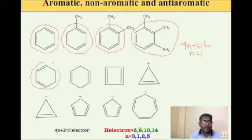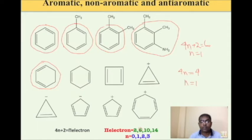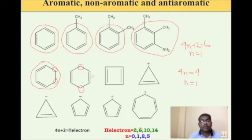Now let us see this molecule. It has 4 pi electrons, so it follows the 4n rule — the rule for anti-aromatic compounds. 4n=4, n=1. However, it is not anti-aromatic because it has an sp3 hybridized carbon atom and the molecule is not planar. Similarly, for this one, because of the presence of an sp3 hybridized carbon atom, the molecule is not planar — even though it could go as anti-aromatic, it is not anti-aromatic. It is a non-aromatic compound.